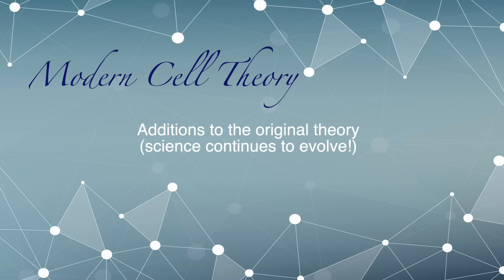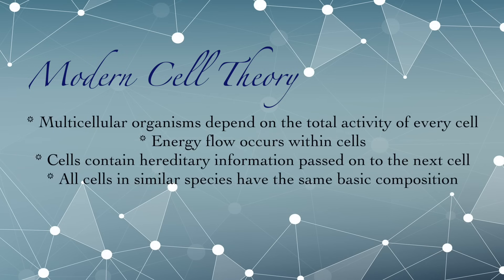The beauty of the cell theory is that it's constantly evolving as we continue to make more advancements in science and technology. Into the 21st century, the scientific community has made several additions to arrive at the modern cell theory. First, research on multicellular organisms has truly revealed that it is billions and trillions of cells working together to allow a complex organism to function. Second, energy flow is being studied at a very molecular and micro level. Third, cells contain hereditary information — we know this to be true of DNA, which will be discussed in another video. And fourth, cells in similar species have the same basic chemical composition.